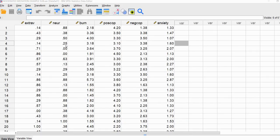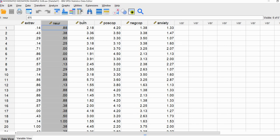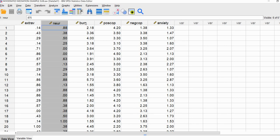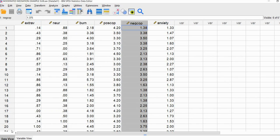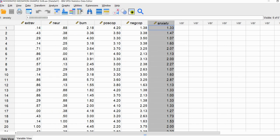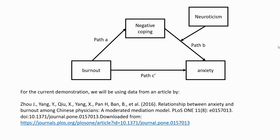Here we have our data. We have our neuroticism variable, we have burnout, we have negative coping, and we have anxiety. Briefly, burnout is going to be serving as our X variable, negative coping as our mediating variable, anxiety as our dependent variable, and neuroticism as our moderating variable.